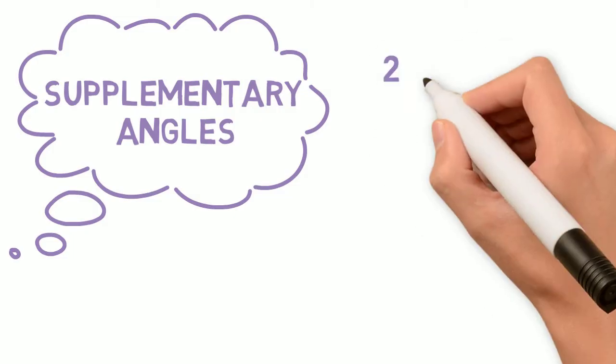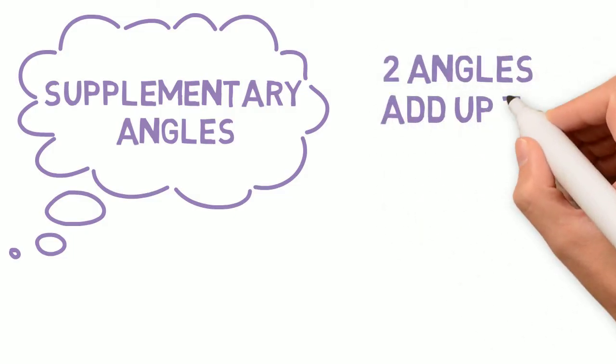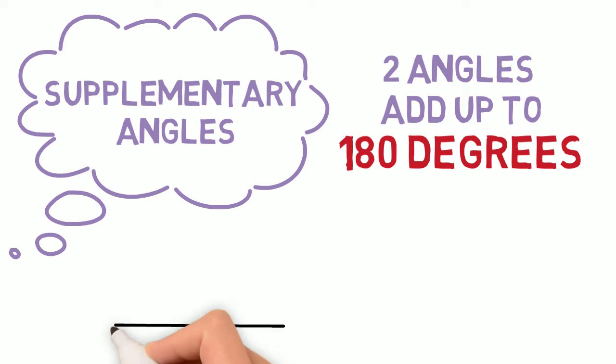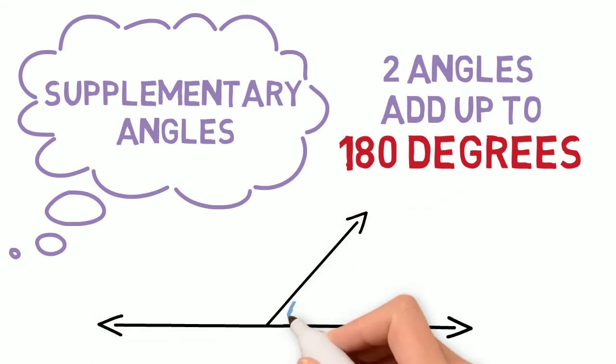A supplementary angle is made up of two angles added together to make 180 degrees or a straight line. Take, for instance, these two angles, 60 degrees and 120 degrees.